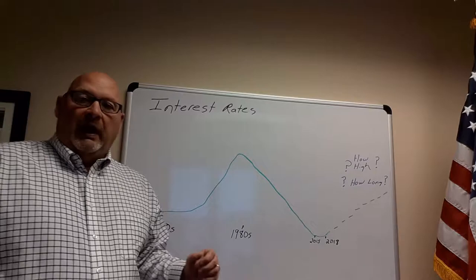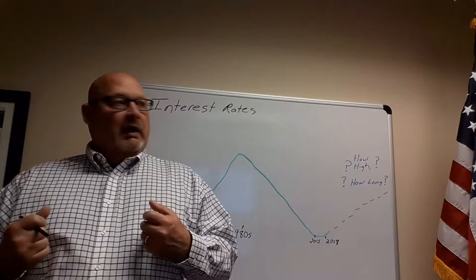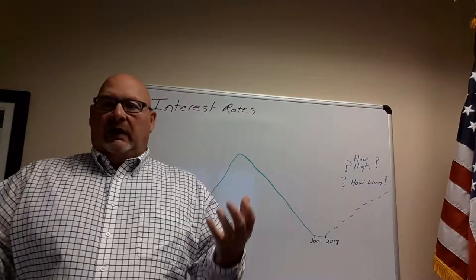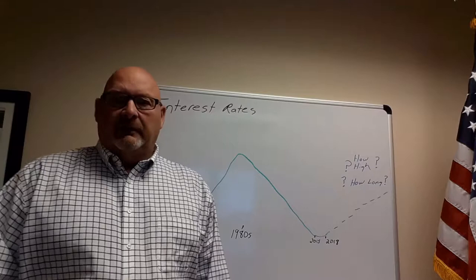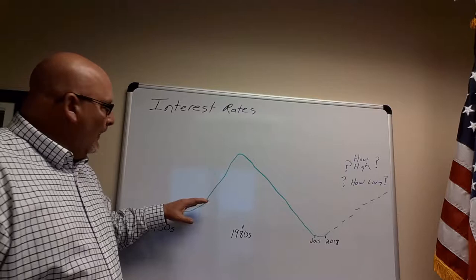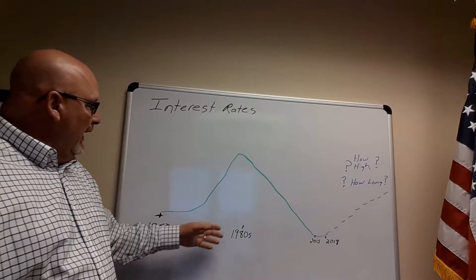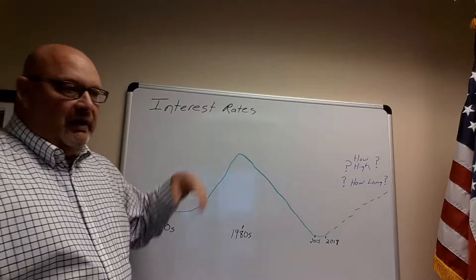Then we get to the 1950s and the economy started perking up. We have the ending of World War II, and then we see this economy with people coming back and going to work and feeling good about our country, about their place — just all kinds of things that were working. So interest rates kind of went along but they started to pick up. During the 70s, interest rates really started to spike, and they peaked out in the 1980s.